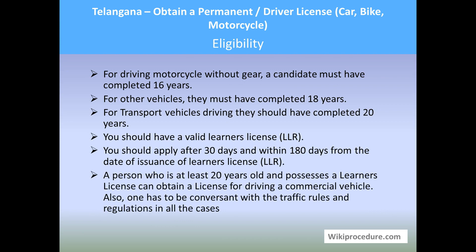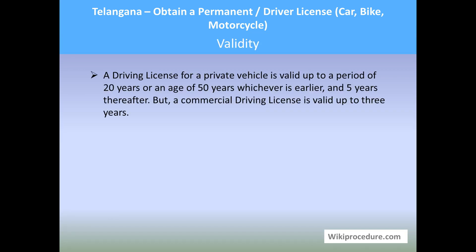Eligibility: for driving a motorcycle without gear, a candidate must have completed 16 years of age; for other vehicles, 18 years; and for transport vehicles, 20 years minimum. You must have a valid learner's license to obtain a permanent driving license, and the learner's license validity must be within 180 days from issuance. A person who is 20 years old and holding a learner's license can also obtain a license for driving a commercial vehicle. Knowledge of traffic rules and regulations is required in all cases. Validity: a driving license for a private vehicle is valid for 20 years or until the applicant reaches 50 years of age, whichever is earlier. Renewal is required every five years. A commercial driving license is valid for up to three years.